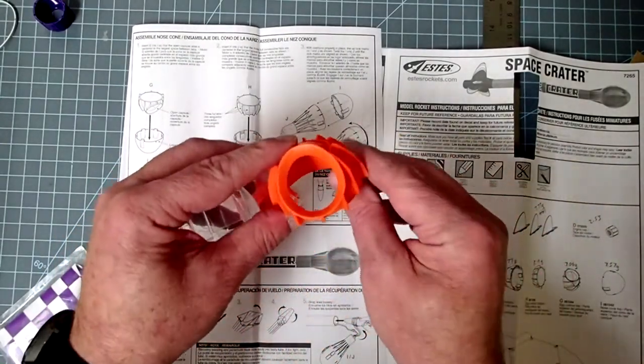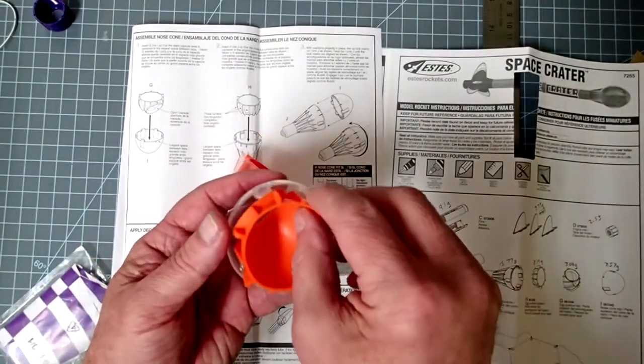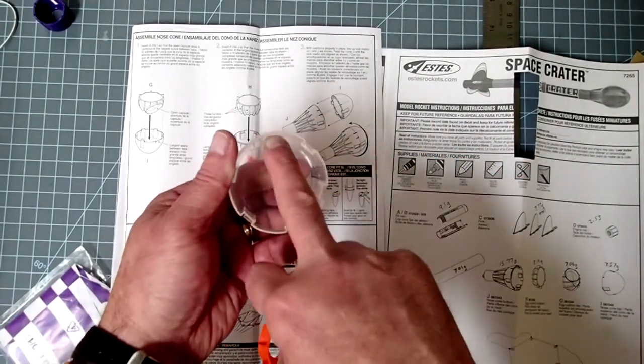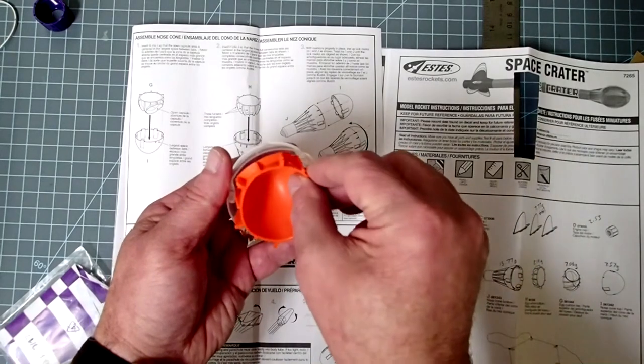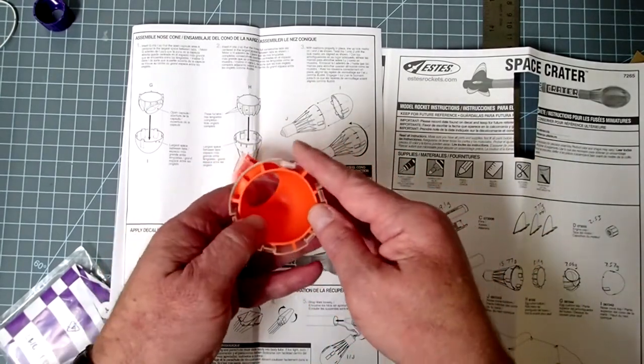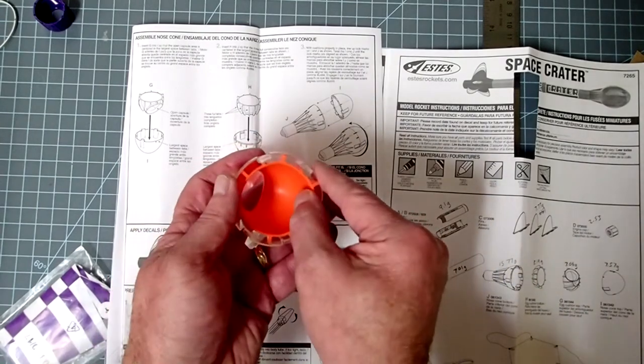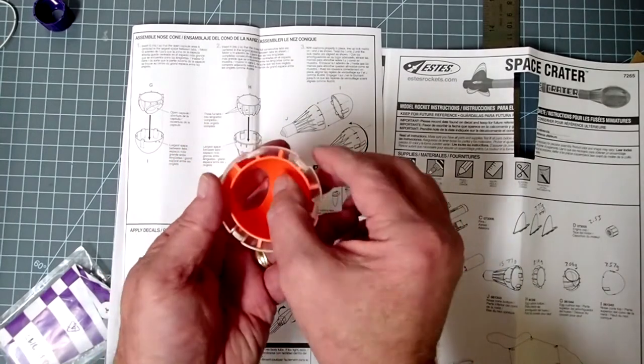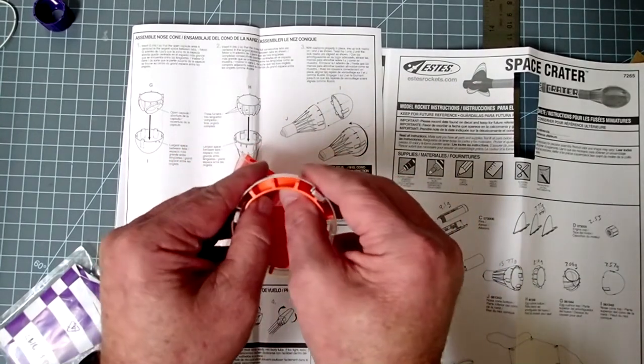And then the piece with the window in it here, this is going to go in the top, and that window goes in this widest area here. So that's just going to slide down like that, and again, the little spokes of the padding, the longer ones go in between the tabs, the shorter ones go up against the locking tabs there.